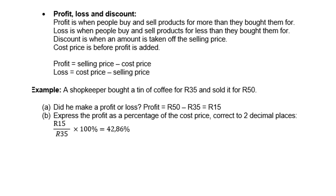Let's look at profit, loss, and discount. Profit is when people buy and sell products for more than they bought them for. Loss is when people buy and sell products for less than they bought them for. Discount is when an amount is taken off the selling price. Cost price is before profit is added. So profit is selling price minus cost price, and loss is cost price minus selling price.